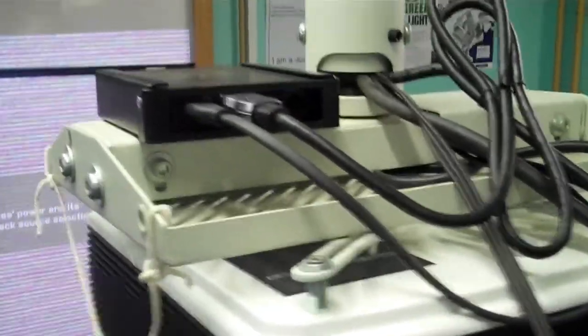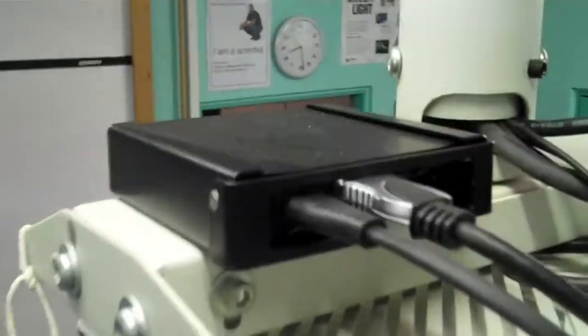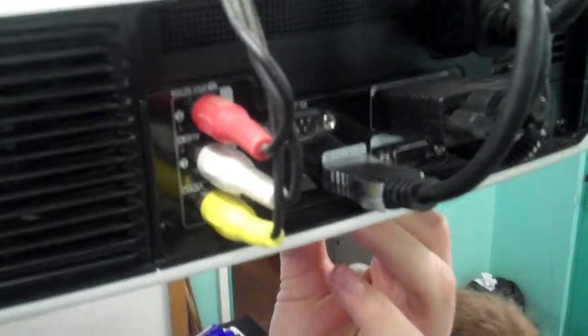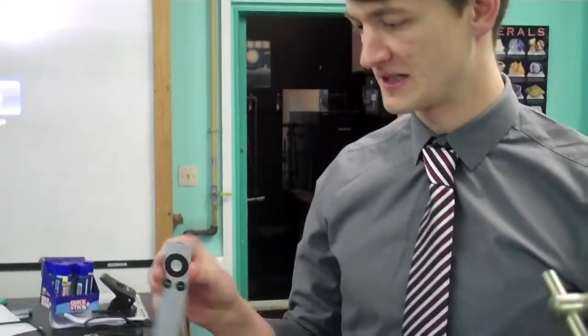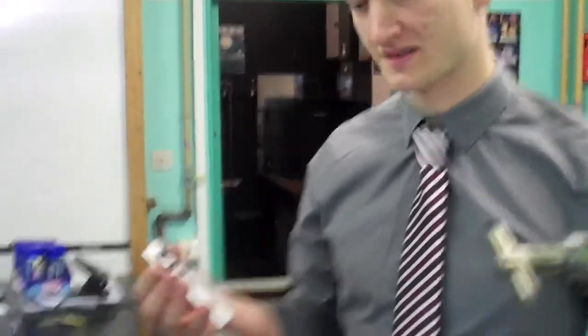On top of the projector we have a little unit called an Apple TV. This is connected to the back of the projector. There's a tiny remote control to power the Apple TV on and off, which is very easy to lose, but does the job.